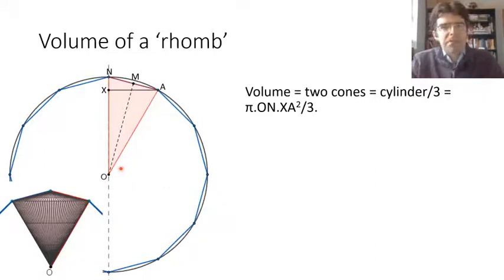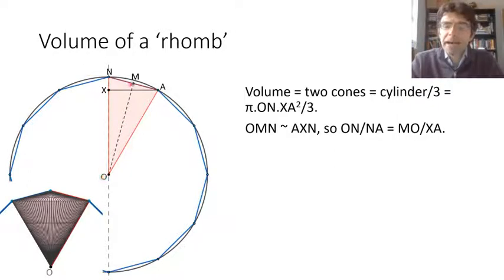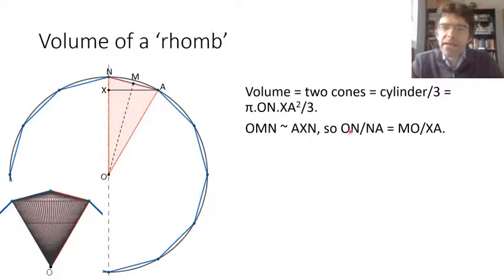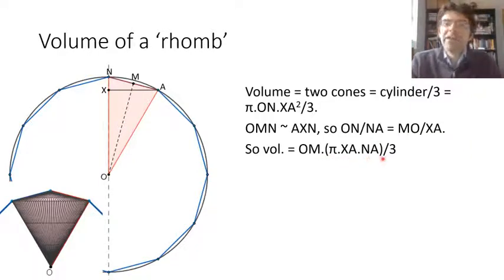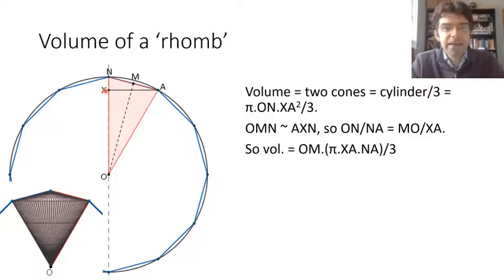The next step is to say that triangle OMN is similar to AXN — they're both right-angled, and they both share angle N as well. That means ON times xa is equal to OM times AN. So we can replace the formula we had for the volume with OM times π times xa times NA over 3. The reason that's useful is that we actually met things like π times xa times NA in the last video: it's the surface area of the upper cone in the rhomb.